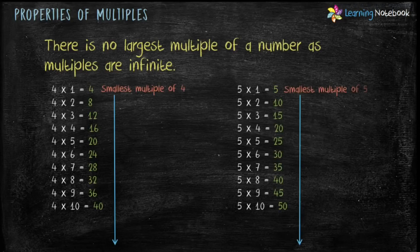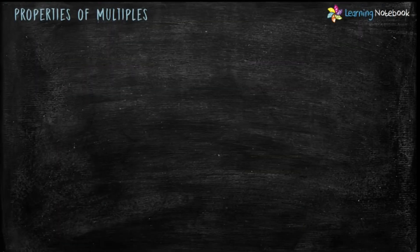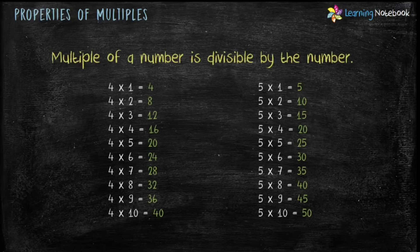The fifth property is there is no largest multiple of a number, as multiples are infinite. Numbers are infinite, therefore multiples of a number are also infinite. The last property is a multiple of a number is divisible by that number. For example, multiples of four like 12, 16, 24, and 32 are all divisible by four. Similarly, multiples of five like 15, 20, 25, and 30 are all divisible by five. These were the properties of multiples.